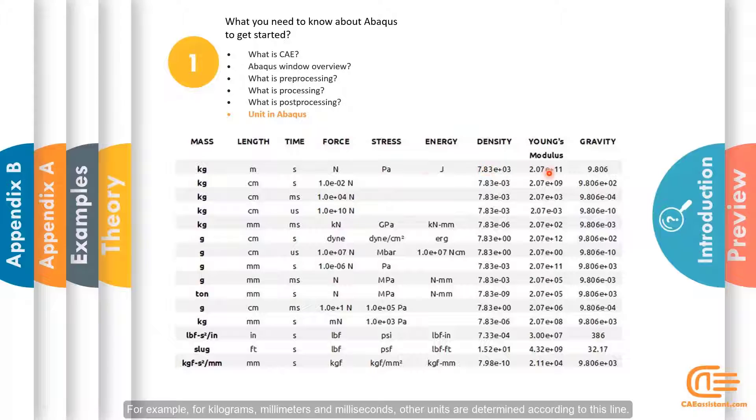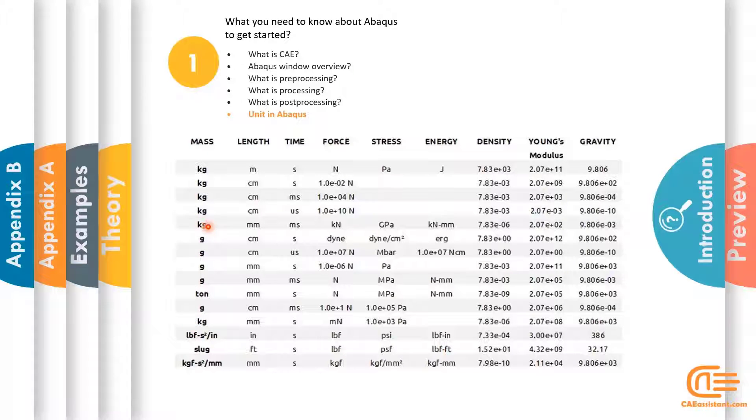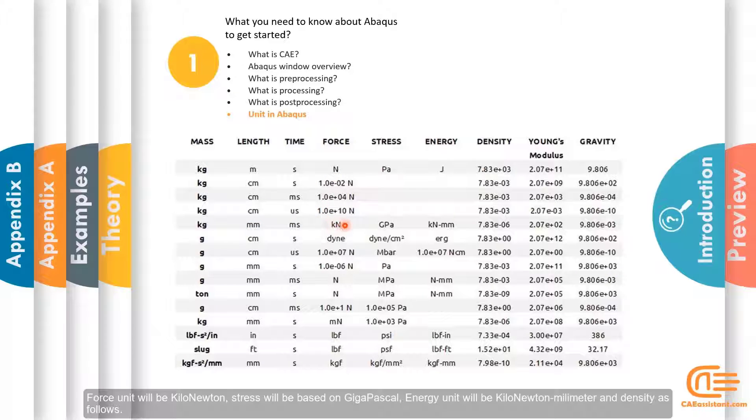For example, for kilograms, millimeters and milliseconds, other units are determined according to this line. Force unit will be kilonewton, stress will be based on gigapascal, energy unit will be kilonewton millimeter and density as follows.